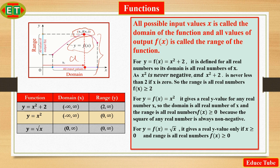Now we can verify the natural domains and associated ranges of some simple functions. The domain in each case at the value of x for which the formula makes sense. For y = f(x) = x² + 2, it is defined for all real numbers so its domain is all real number of x. x² + 2 is never less than 2 if we put value of x is 0.